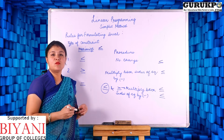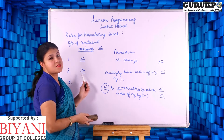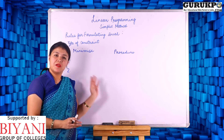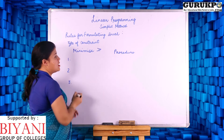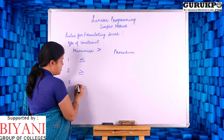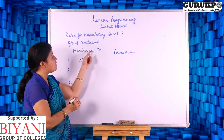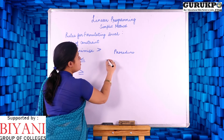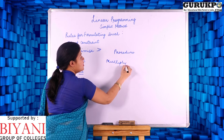Now as per this same method, we are going to discuss the same for the minimized version. For the minimized version, the sign is at-least. Again there are three types of constraints. For the at-most sign, we have to change it to at-least, so we are going to multiply both sides of the equation by a negative sign.